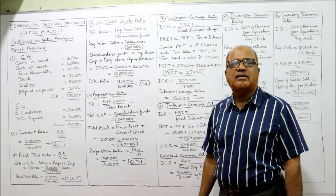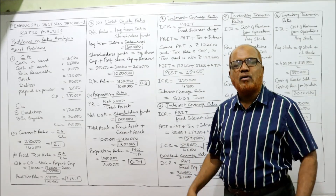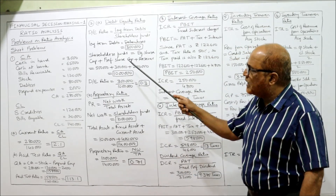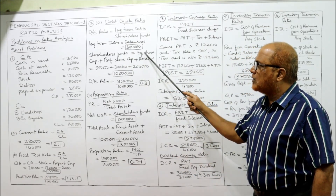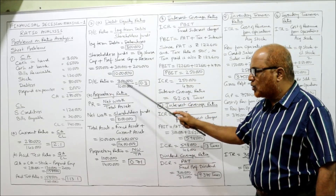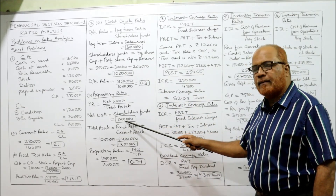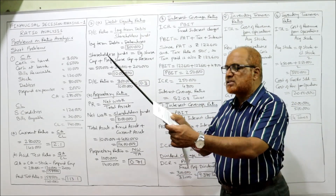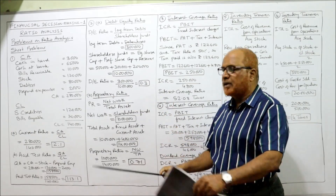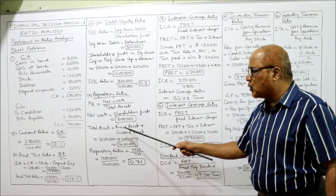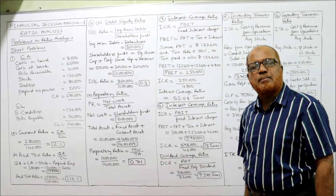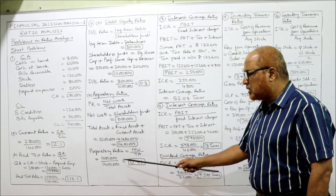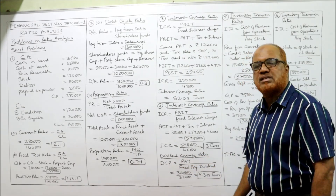Net worth means shareholders fund, which we already calculated as 10 lakh. Total assets means fixed assets plus current assets: 10 lakh plus 4 lakh equals 14 lakh. Substituting in the formula, proprietary ratio equals net worth 10 lakh divided by total assets 14 lakh, which gives 0.71. Second problem — debt equity ratio and proprietary ratio — is complete.